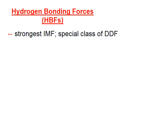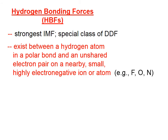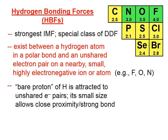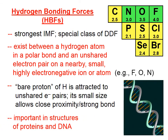Hydrogen bonding forces are the last one. They are often considered to be the strongest intermolecular force and are a special class of dipole-dipole forces. They exist between a hydrogen atom in a polar bond and an unshared electron pair on a nearby, small, highly electronegative ion or atom — such as fluorine, oxygen, or nitrogen. Hold the phone — get it? F-O-N. That's the only time you can have hydrogen bonding. In other words, the bare proton of hydrogen is attracted to unshared electron pairs on neighboring molecules, and the small size of that bare proton allows close proximity, which allows for a strong bond. Hydrogen bonding forces are important in many structures, including that of proteins and DNA.